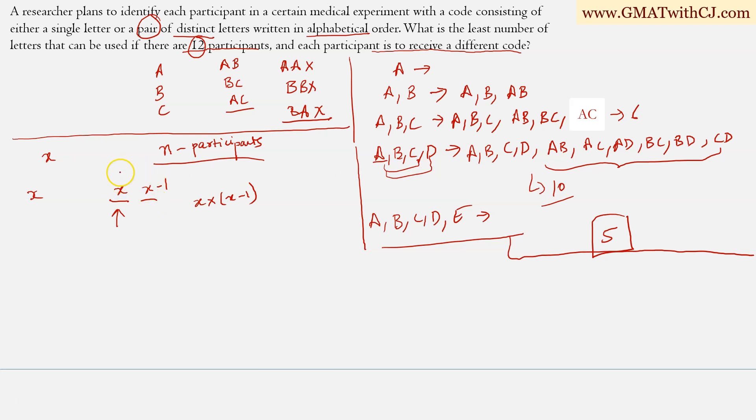But in this case, it may or may not follow the alphabetical order, right? Because it could be BA also. Now we want to eliminate all of those cases. Now we have to think a bit. How do we eliminate those cases in which this pair doesn't follow the alphabetical order. Now if you think about it for every two letters, let's say AB, we are going to generate two codes, AB and BA also, because the only focus here was to create codes using two distinct letters, right? Similarly for CA also we'll have CA and AC.